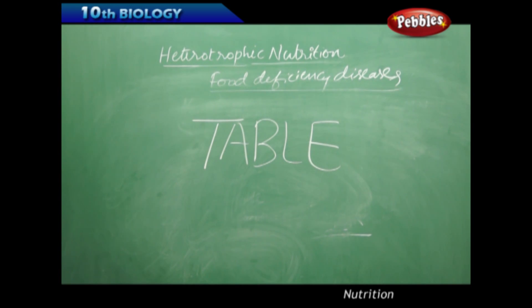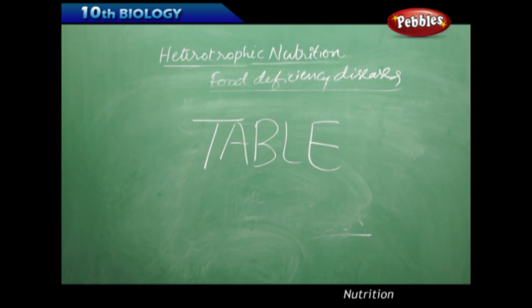Pantothenic acid is found in sweet potatoes, groundnuts, vegetables, liver, kidney and egg. Deficiency leads to burning feet syndrome, with symptoms of walking problems and sprain.